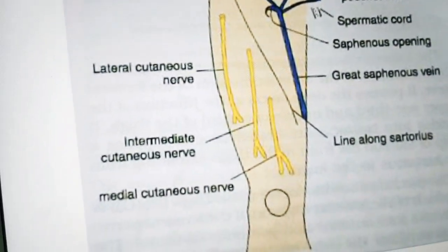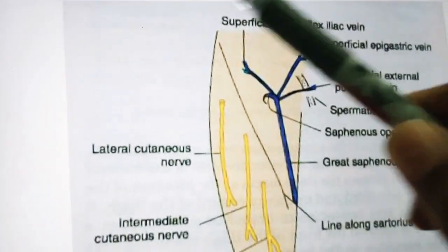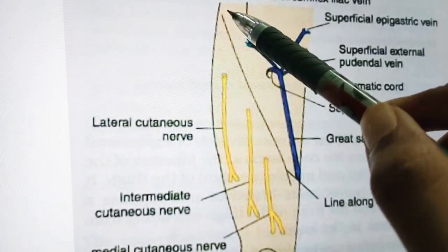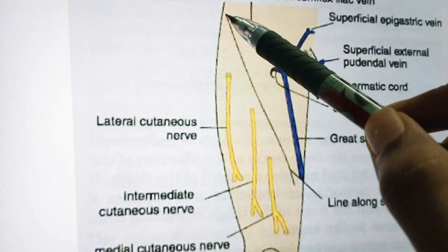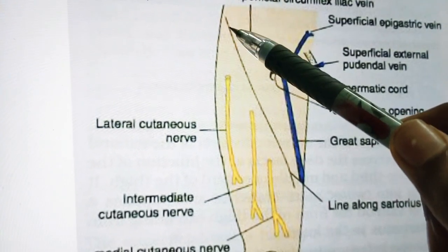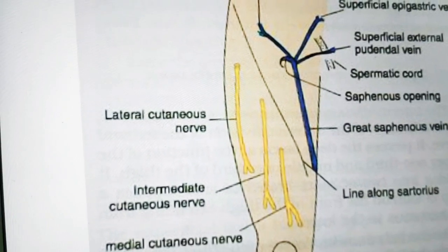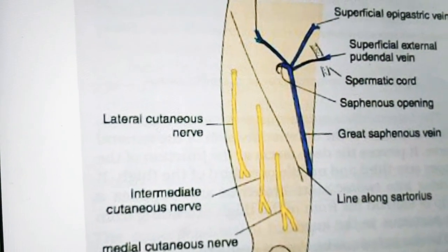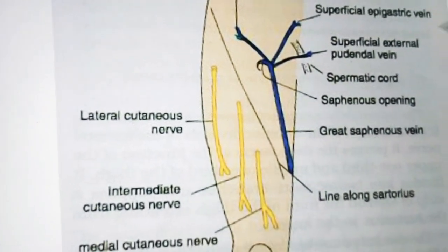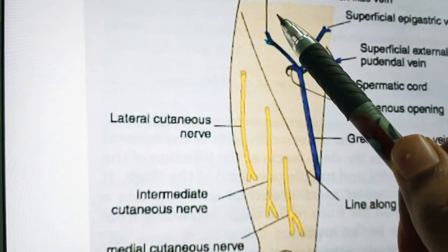The first surface landmark is the iliac crest. The iliac crest has an anterior superior iliac spine anteriorly and a posterior superior iliac spine posteriorly. The iliac crest is a thick, curved bony margin forming laterally the lower margin of the waist.